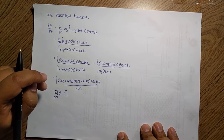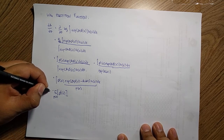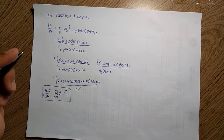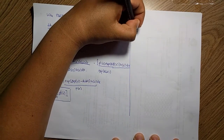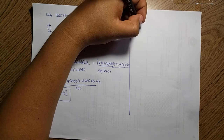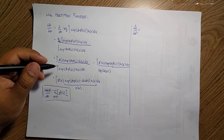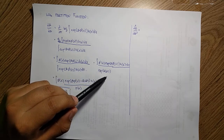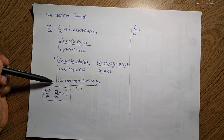So the first derivative of the cumulant A with respect to θ gives us the first moment E[φ(x)]. We can do the same thing for the second moment by taking the second derivative d²A/dθ². Let's start from the integral form of the first derivative before substituting p(x), as that may be easier to follow.